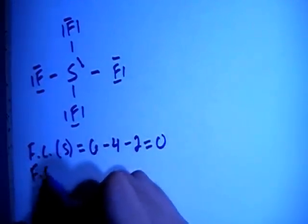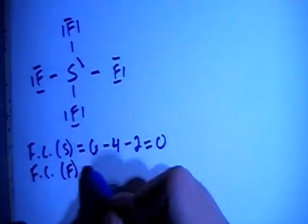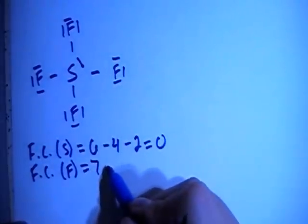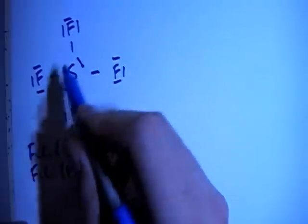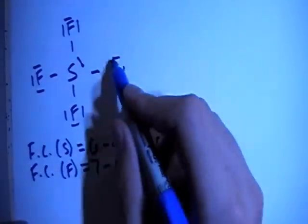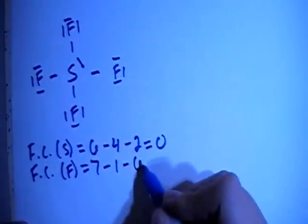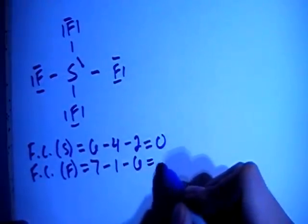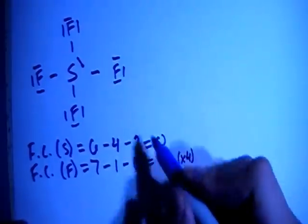The formal charge on each of the fluorines—notice they're all the same setup so the formal charges will all be equal—is 7 valence brought in minus 1 bond for each, minus 2, 4, 6 non-bonding electrons on each fluorine, for a formal charge also of 0.